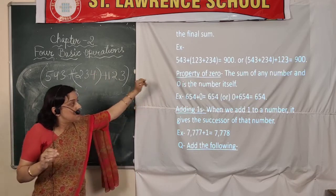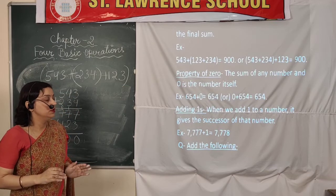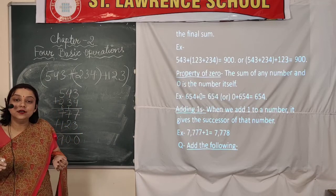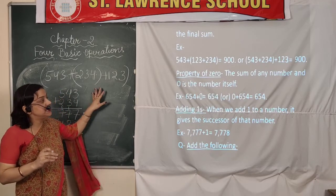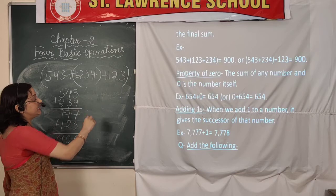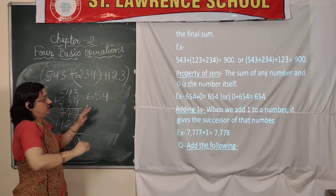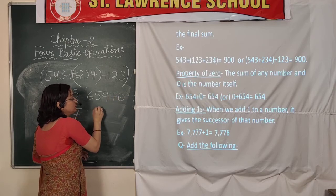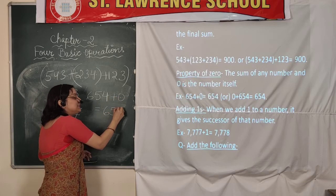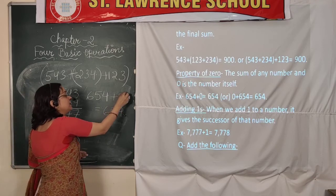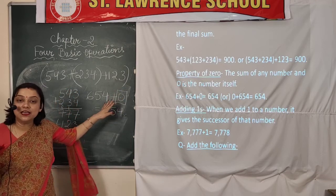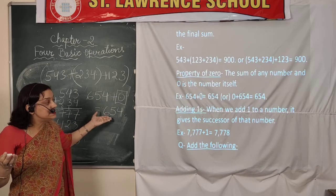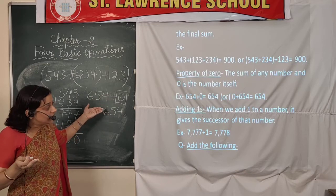The next property is the property of zero: the sum of any number and 0 is the number itself. Whenever we take any number — for example 654 — and add 0 to it, the answer is 654. Why? Because 0 itself has no value, and if we are adding something which has no value, the number will remain the same.